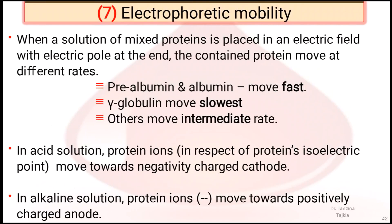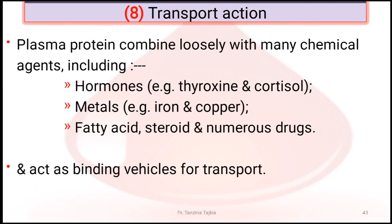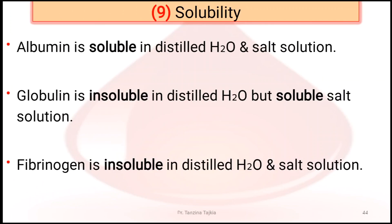Electrophoretic mobility: when a solution of mixed proteins is placed in an electrical field, proteins migrate at different rates — albumin migrates fastest, gamma-globulin migrates slowest, and others at intermediate rates. In acid solution, proteins migrate toward the negative charge; in alkaline solution, toward the positive charge. Transport action: plasma proteins combine loosely with many substances — hormones, metals, fatty acids, steroids, and numerous drugs — and act as binding vehicles for transport.